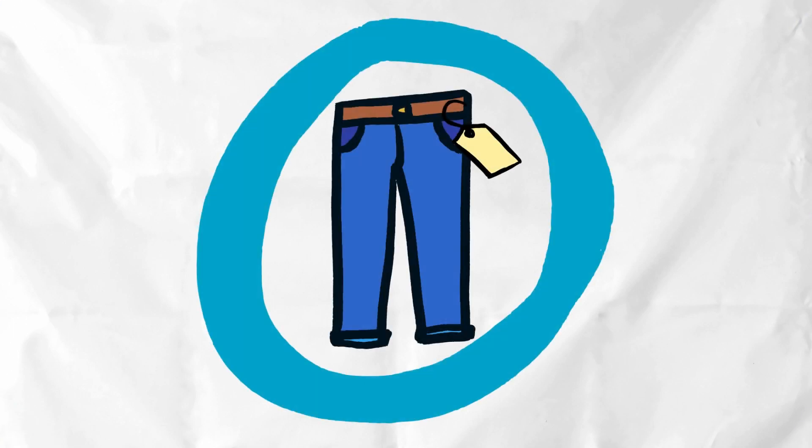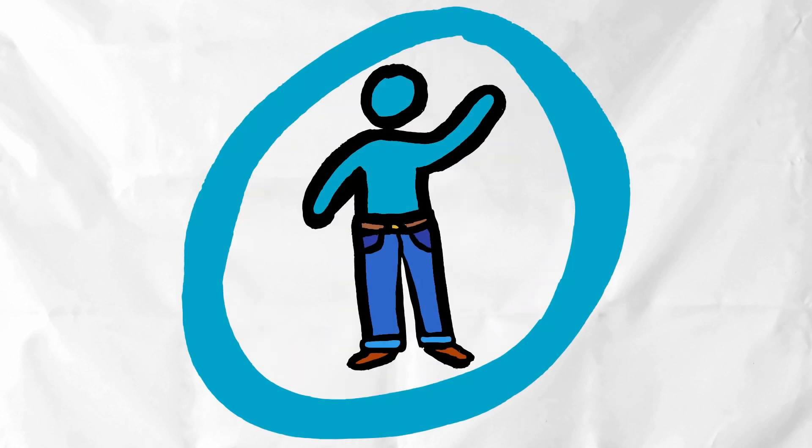What would this mean for an everyday item like a pair of jeans? Well in a linear model we would buy the jeans, wear them and then throw them out when they're no longer in fashion or fit us.